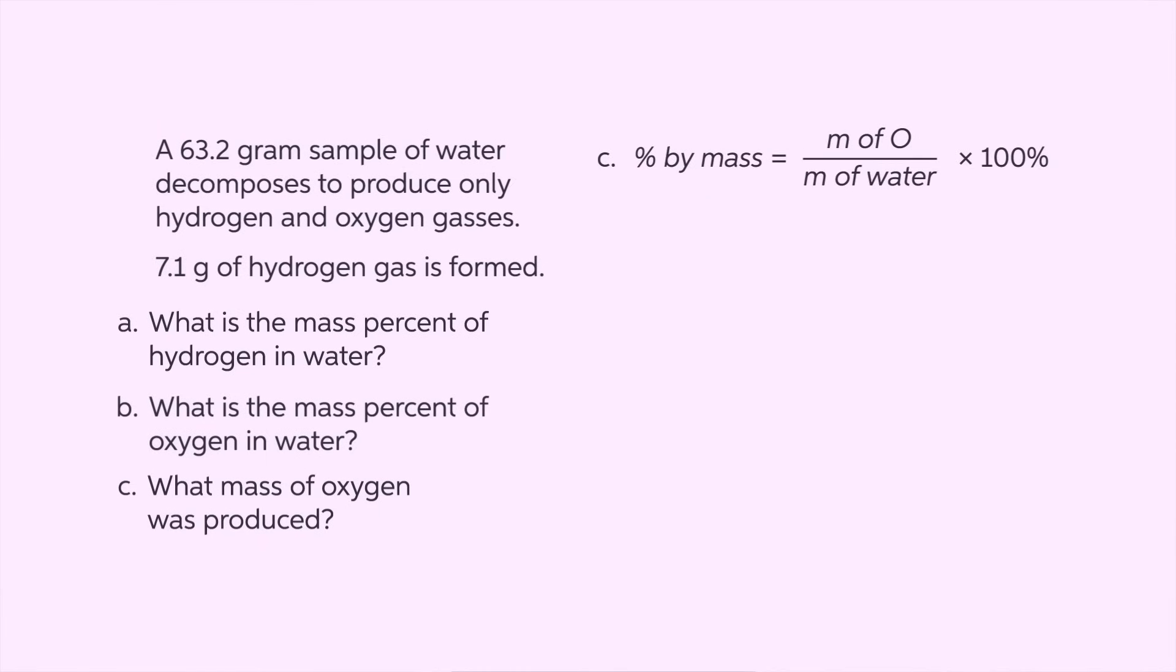Finally, the mass of oxygen can be found using the mass percent formula. Percent of oxygen equals mass of oxygen divided by mass of water times 100%. Using 88.8% oxygen and 63.2 grams of water, we calculate 56.1 grams of oxygen. Double-checking, the sum of 56.1 and 7.1 grams equals 63.2 grams, the mass of water.